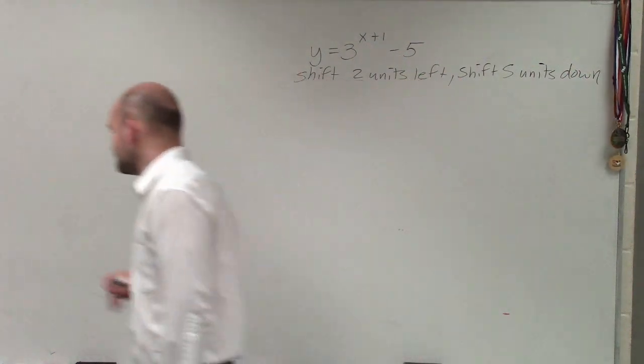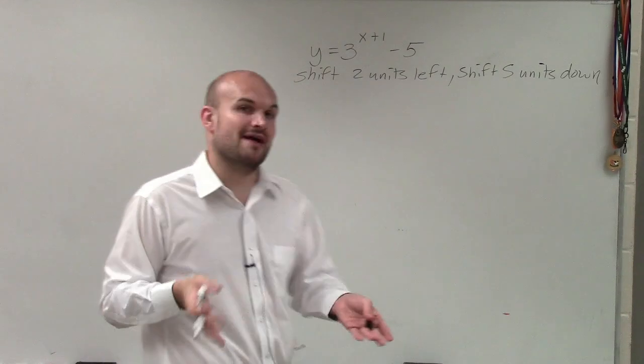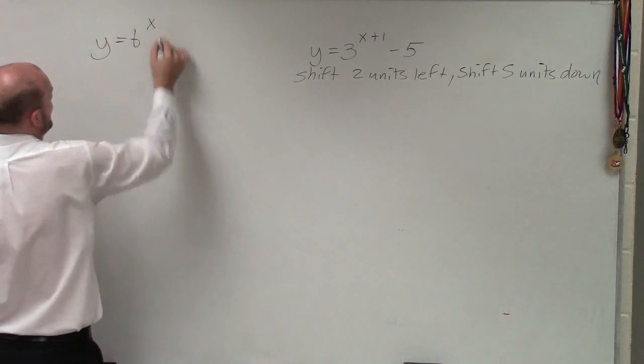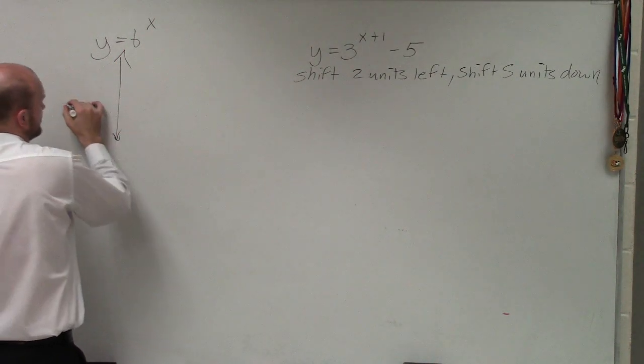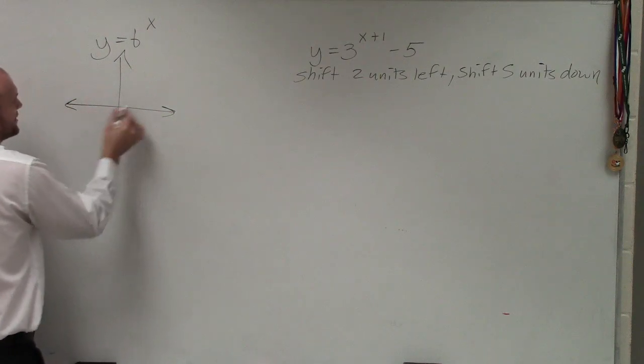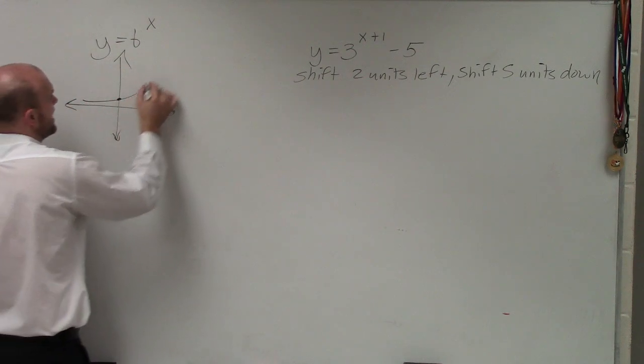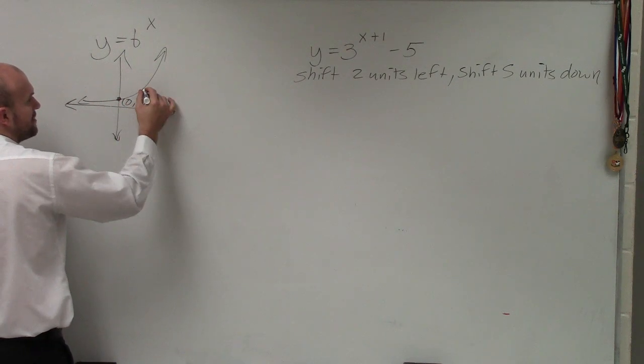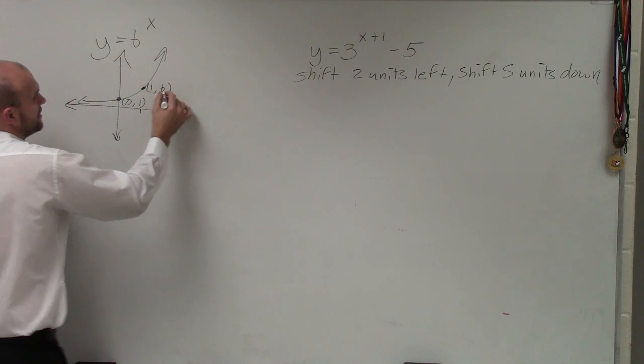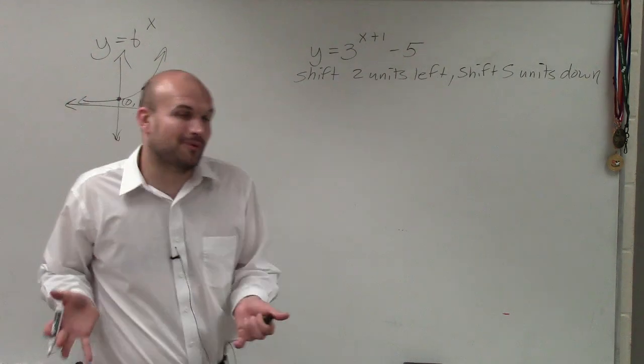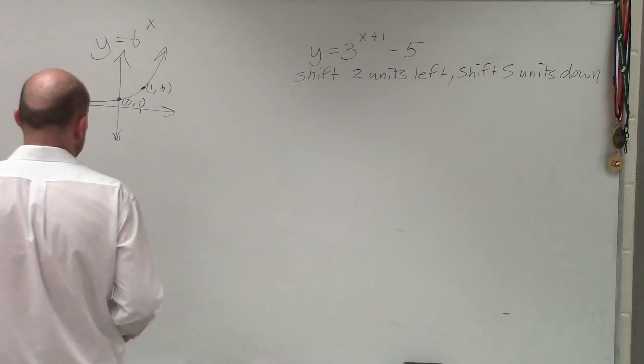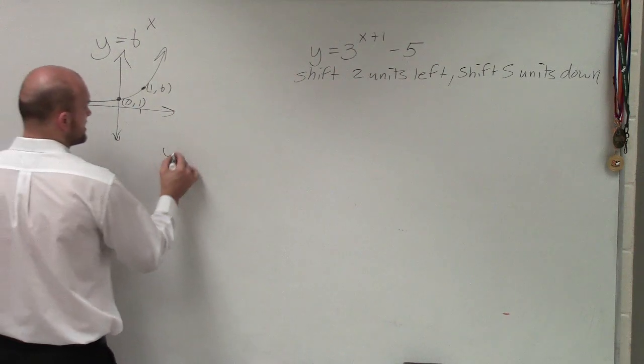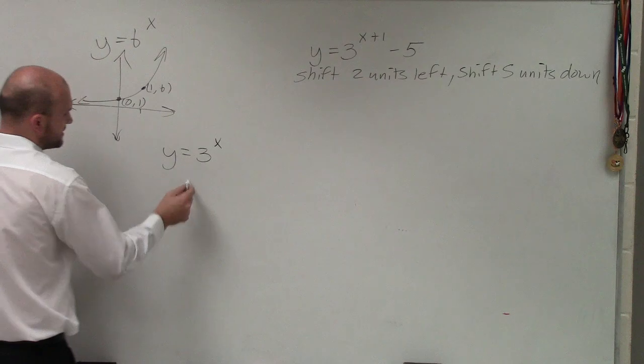So now what we're going to do is graph our parent graph. The reason why I like to graph the parent graph is because when we have that parent graph, it's very simple to really graph it. Because if we just have y equals b to the x with no transformations, we know that this first point is our y-intercept, which is 0 comma 1, and then our next point is 1 comma b. So what that means is if I choose my points of 0 and 1, it's pretty simple to be able to graph a parent graph with no transformations.